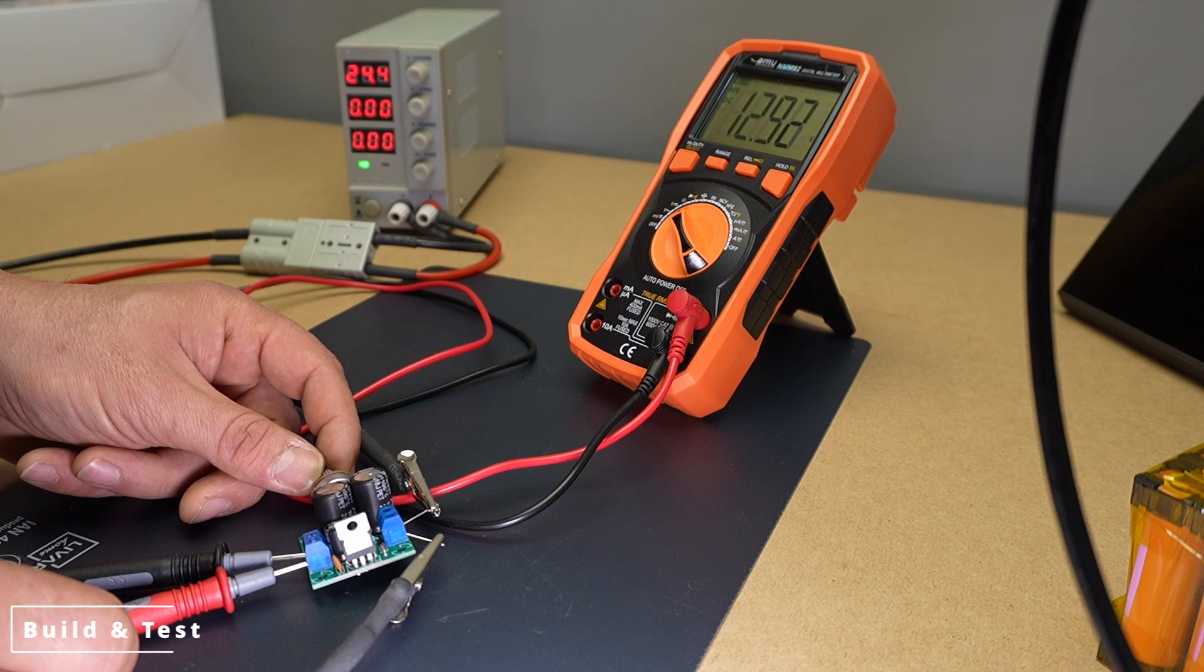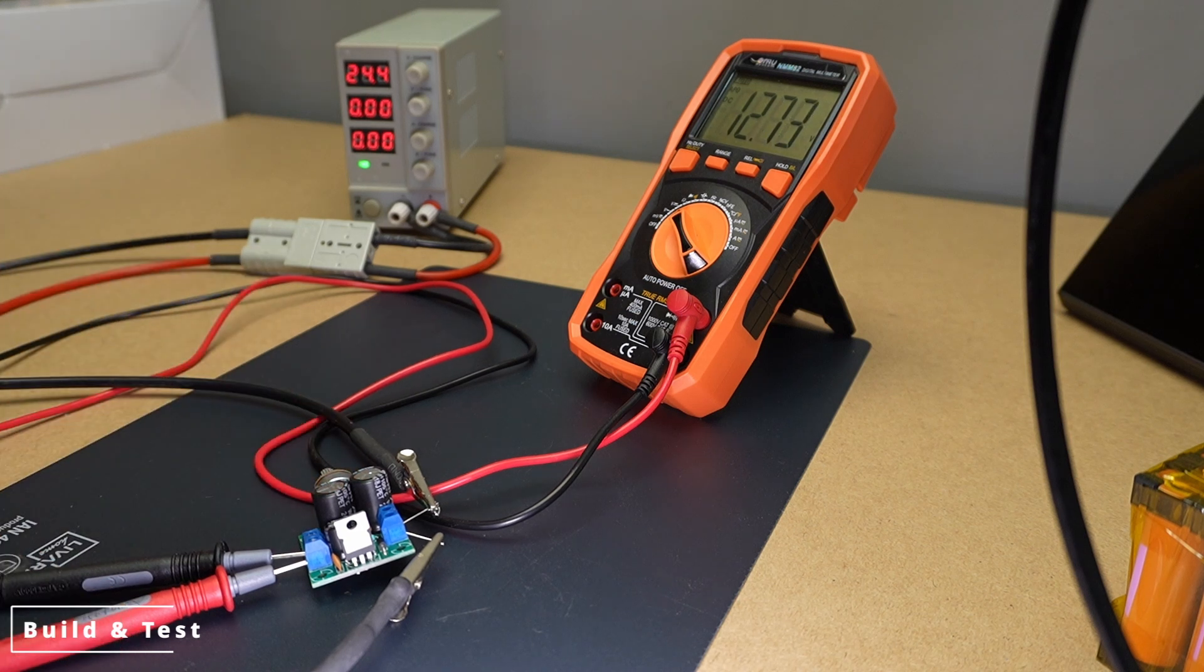Checking stability. Once the output voltage is successfully regulated, let the circuit run for a few minutes to ensure its stability. During this time, check whether any components, such as transistors or ICs, are overheating.